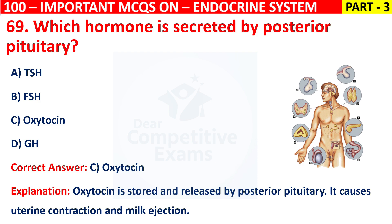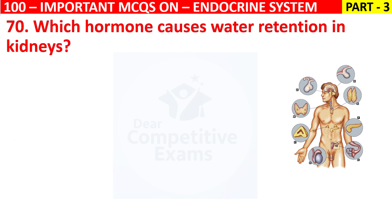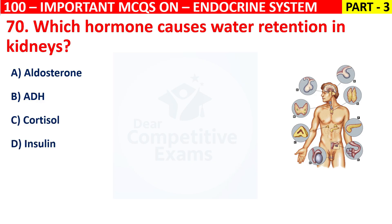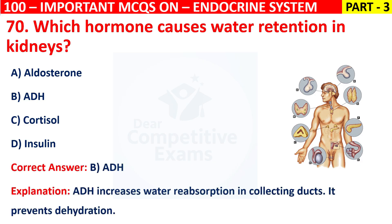Question 70: Which hormone causes water retention in kidneys? Your options are Aldosterone, ADH, Cortisol, or Insulin. The correct answer is B, that is ADH. ADH increases water reabsorption in collecting ducts. It prevents dehydration.